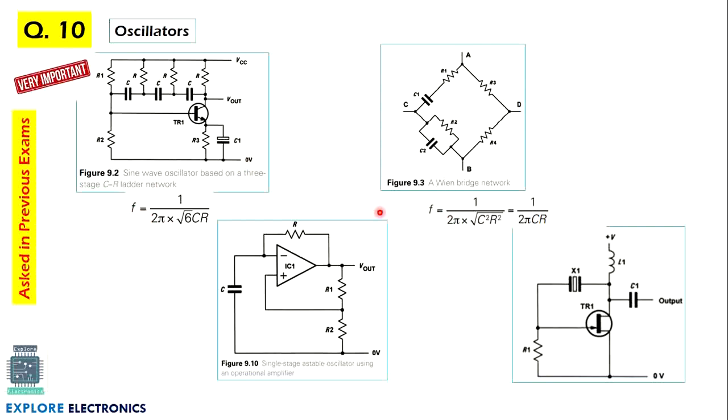These frequency expressions are very important and we need to write while explaining the oscillators. So RC phase shift oscillator is one of the very important out of these, and you may get questions on Wein bridge oscillator or astable oscillator, which is also very important, and you may get crystal oscillator also. Out of these four, one or two questions will be there in exam for sure.